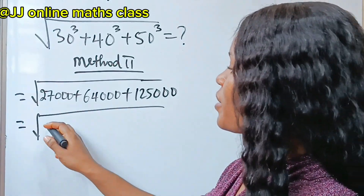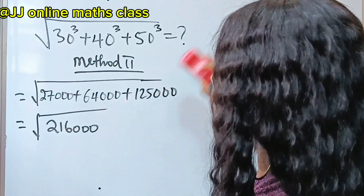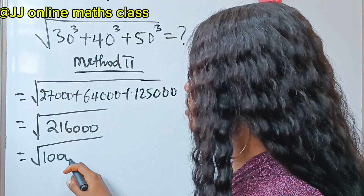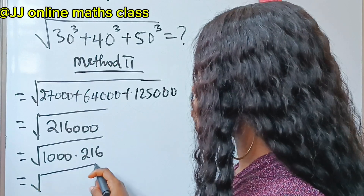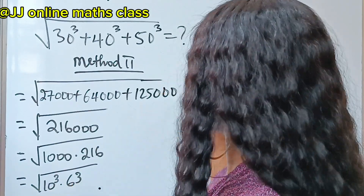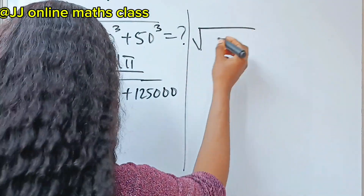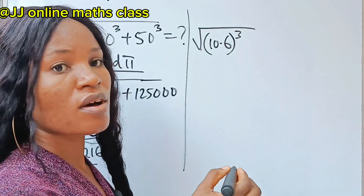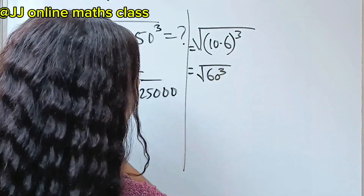If you add these together you get 216,000, as calculated before. This is equal to square root of 1,000 multiplied by 216. So this is equal to square root of 10 to the power of 3 multiplied by 6 to the power of 3. Continuing, we have square root of 10 multiplied by 6, raised to the power of 3, which is square root of 60 to the power of 3.